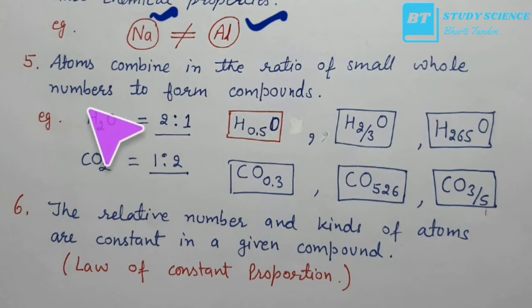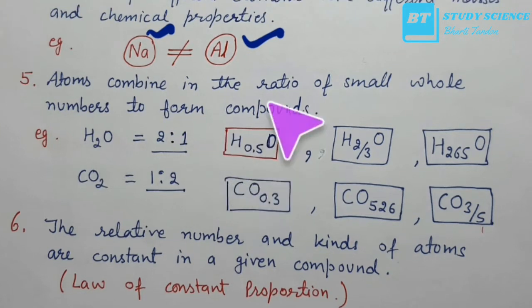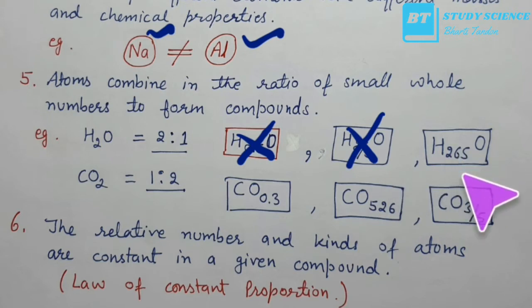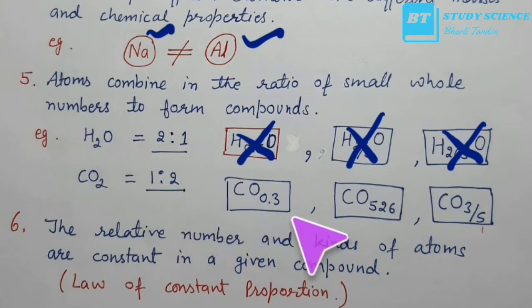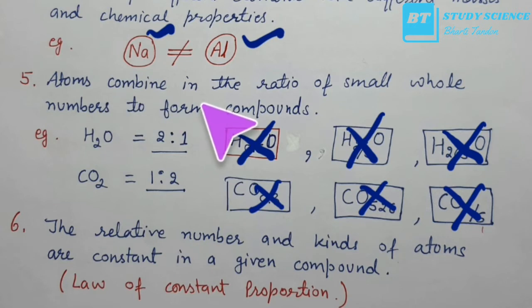Fifth, atoms combine in the ratio of small whole numbers to form compounds. For example, water is H₂O — the ratio is 1:2. You will never see H₀.₅O or H₂/₃O. Similarly, CO₂ has a ratio of 1:2; you will never find CO₀.₃ or CO₅.₂₆. Atoms always combine in whole numbers to form compounds.